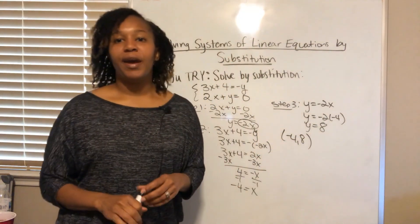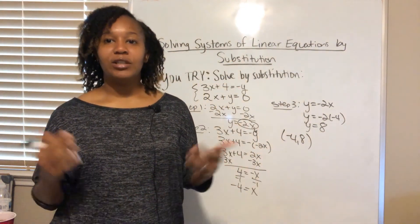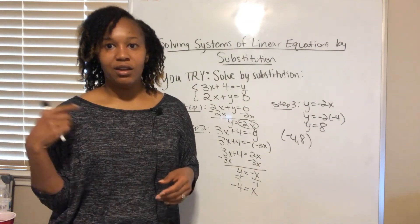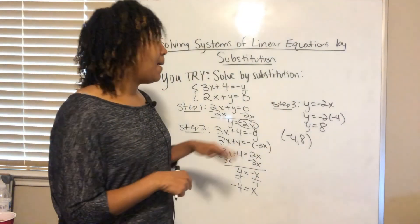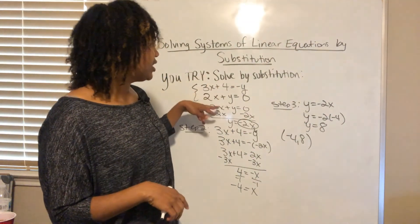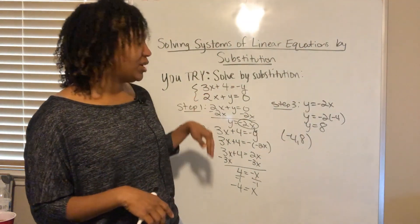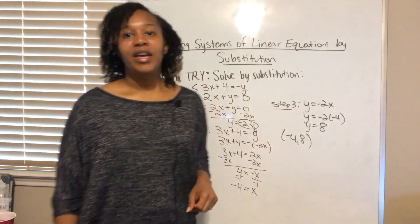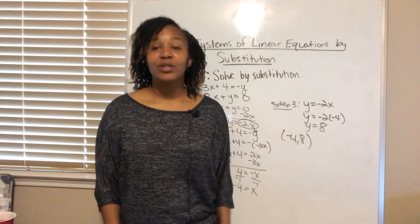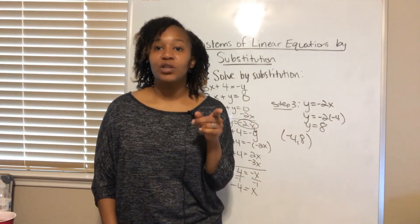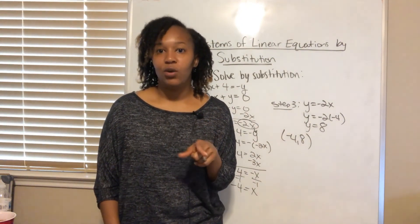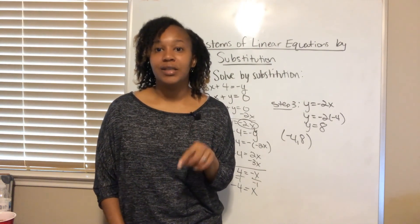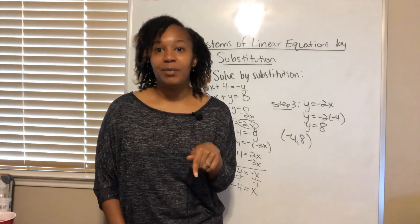You can go back and check by plugging negative 4 and 8 into both equations — I've shown that process in all the other examples. The solution is (negative 4, 8). Thanks for tuning in, and make sure you watch the next video on solving systems of equations by elimination.